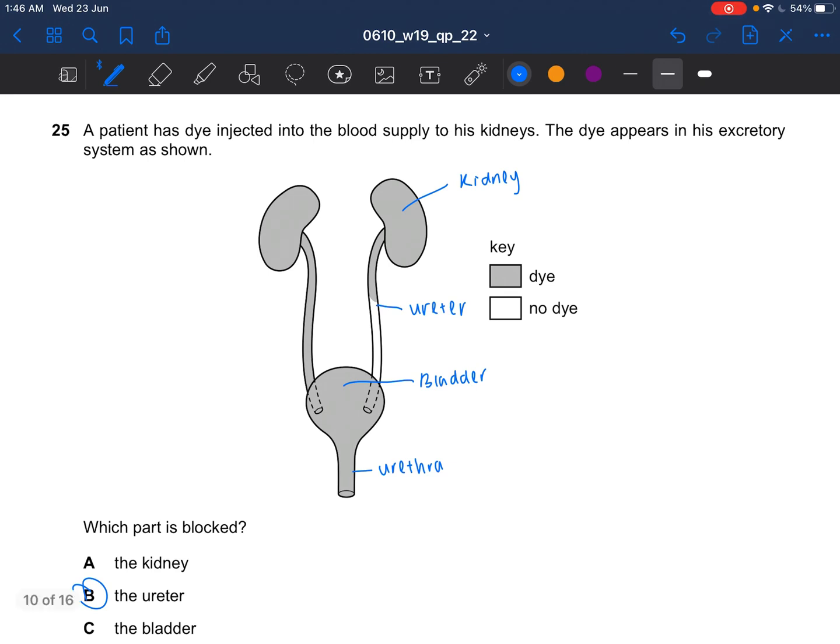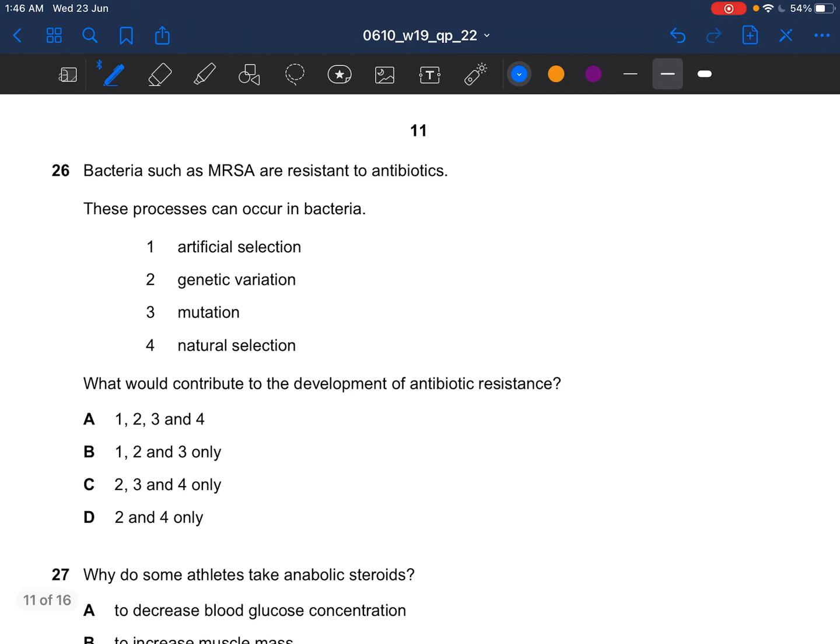Next question. Bacteria such as MRSA are resistant to antibiotics. Which would contribute to the development of antibiotic resistance. Antibiotic resistance is natural selection, not artificial. The cause of antibiotic resistance is due to random mutations causing genetic variation. So your answer would be 2, 3, 4 which is C.